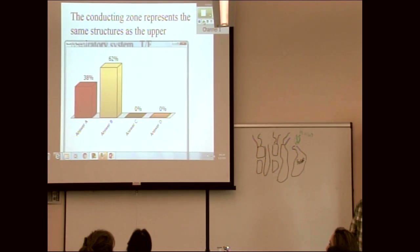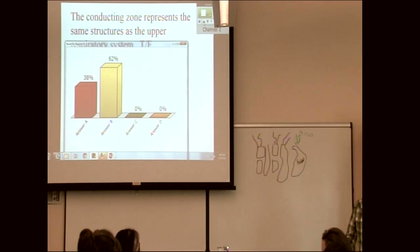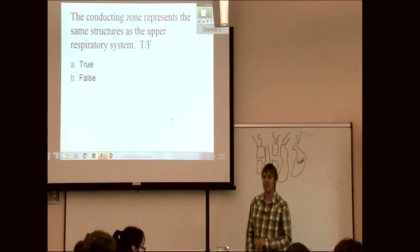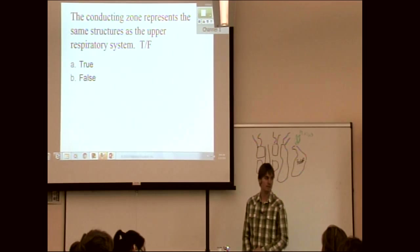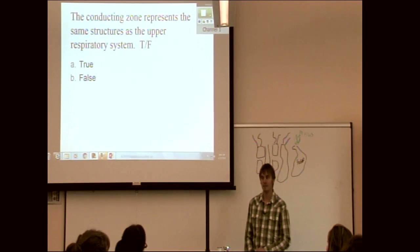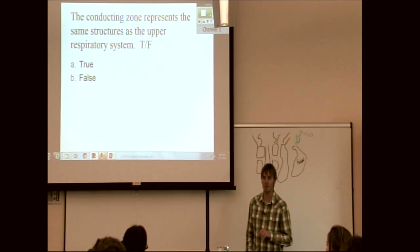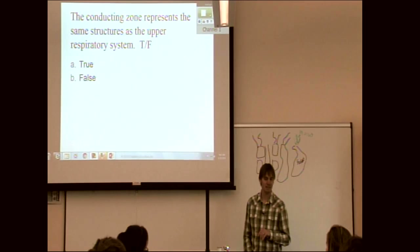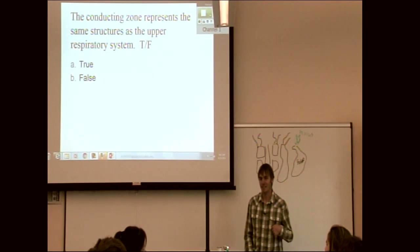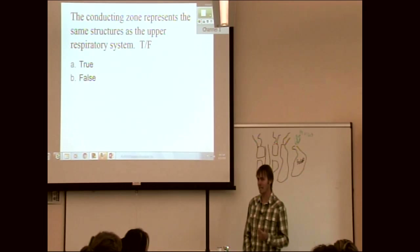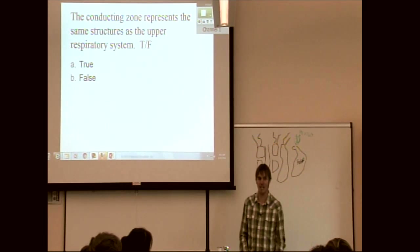The answer is false — they are not the same. The upper respiratory system stops at the epiglottis, at the larynx level, while the conducting zone extends way down into the lungs. They're not synonymous even though it might seem like they should be.